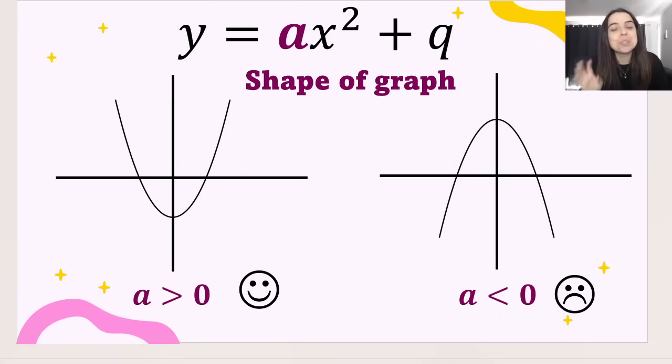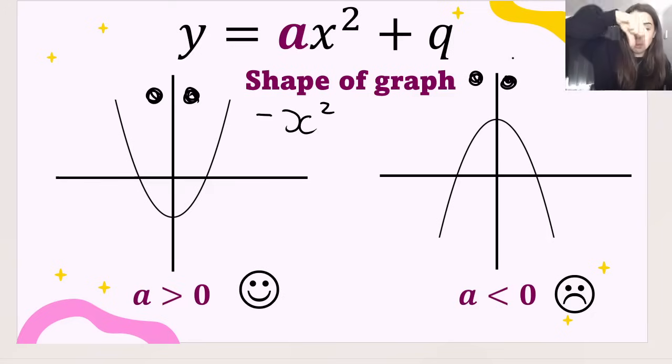The first thing to note, as I've mentioned already, is that a tells me about the shape of the graph. So if a, that value over there, is bigger than zero, so a positive number, two, a quarter, ten, my graph is going to be a smiley face. Can you see here? My graph is a smiley face. If that a value is a negative value, negative a quarter, negative ten, or negative one, so negative x squared, for example, my graph is going to be a sad face. My u is going to point downwards.